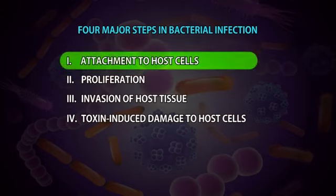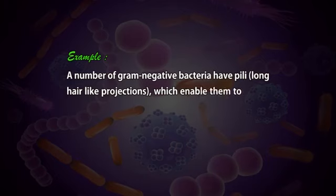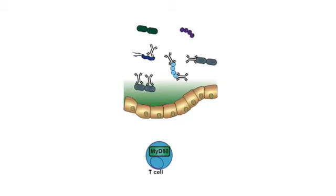Attachment to host cells. Many bacteria have surface structures or molecules that help them to attach to host cells. For example, a number of gram-negative bacteria have pili — long hair-like projections — which enable them to attach to the membrane of the intestinal or genitourinary tract. Other bacteria like Bordetella pertussis secrete adhesion molecules that facilitate attachment to host cells. The humoral immune response secretes IgA specific for such bacterial structures, which, when attached to the molecule, prevents attachment of bacteria to host mucosal epithelial cells. This is the main host defense against bacterial attachment.